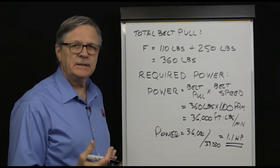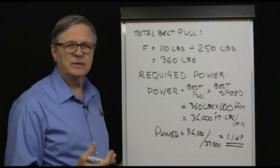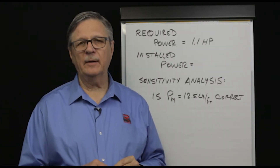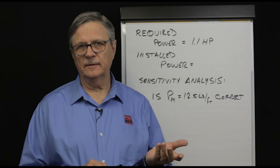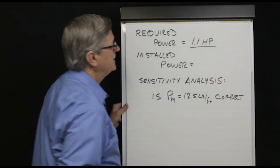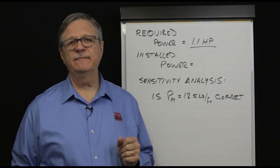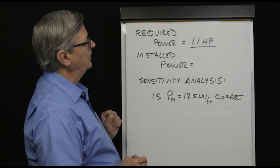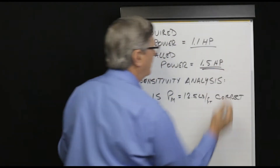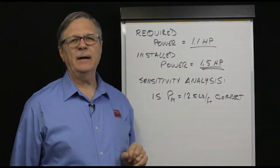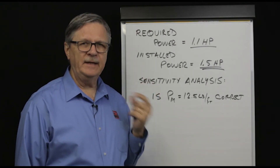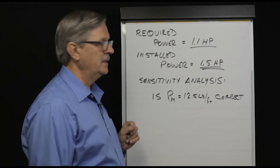Now we need to make a selection of what size conveyor drive to install. We calculated that required power, based on an average package weight of 50 pounds per package, is 1.1 horsepower, so we might be tempted to select 1.5 horsepower to have a little extra power in reserve. However, it's a good idea to do a sensitivity analysis when making decisions such as this.